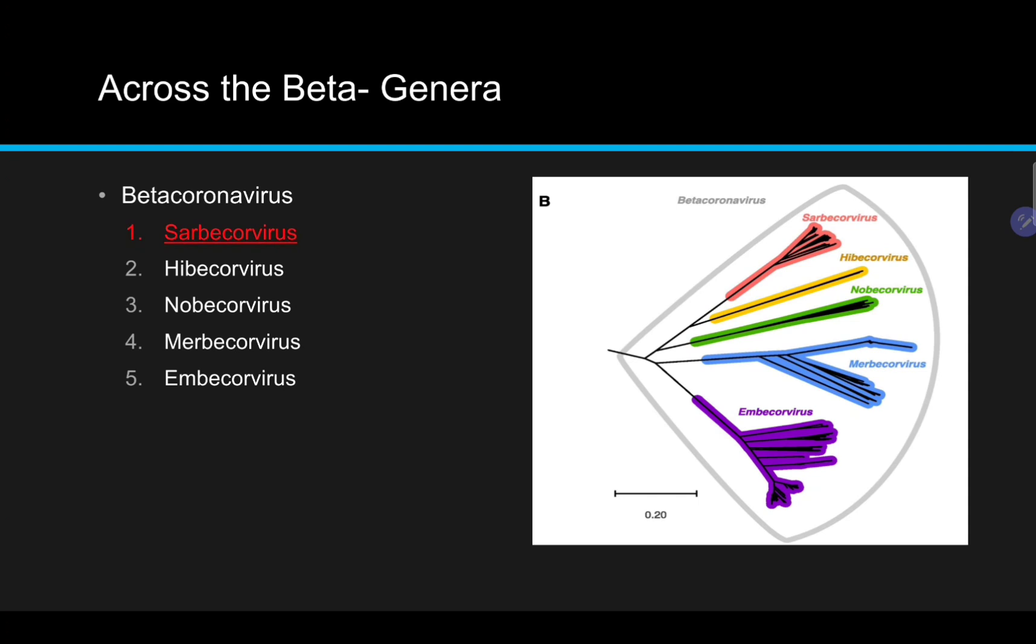The beta genera is extremely diverse. Obviously, within each subgenera, there is a higher degree of similarity, but overall, there is not a high level of conservation in the S1 and S2 domains.